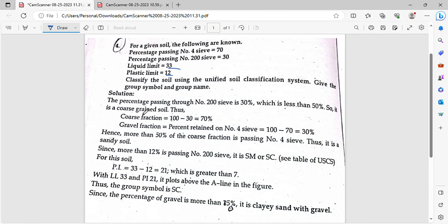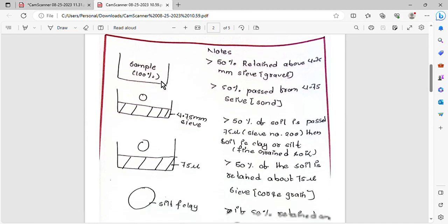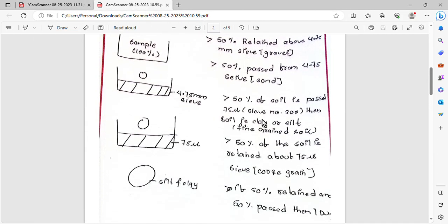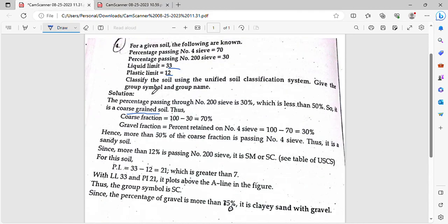So we can conclude it's coarse-grained soil. The percentage passing through sieve number 200 is 30%, which is less than 50%. Since more than 50% is retained, this is coarse-grained soil.